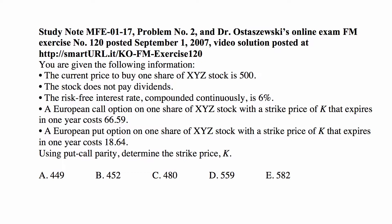A European put option on one share of XYZ stock with a strike price of K that expires in one year costs 18.64. Using put-call parity, determine the strike price.